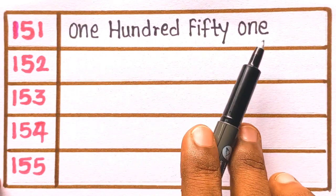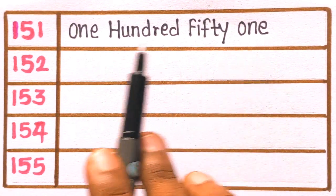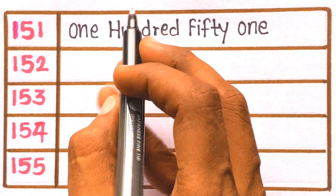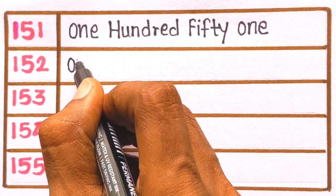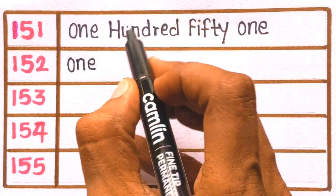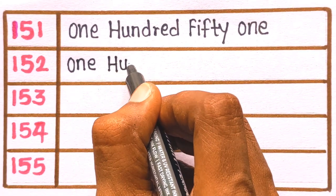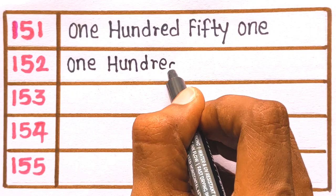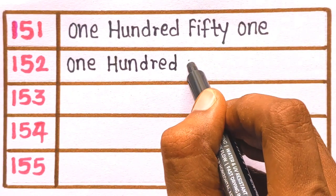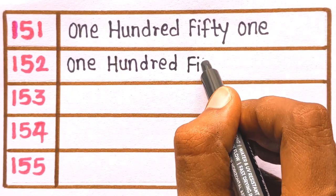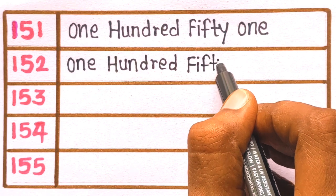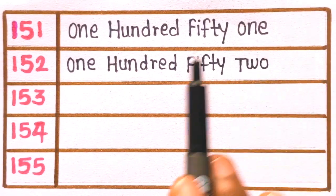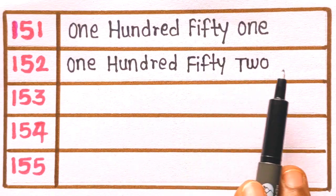Next is 152. One. O-N-E, one. H-U-N-D-R-E-D, one hundred. F-I-F-T-Y, one hundred fifty. T-W-O. 152 is one hundred fifty two.